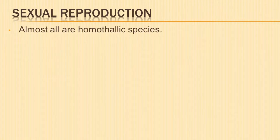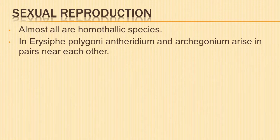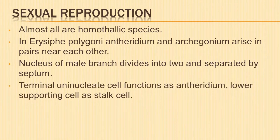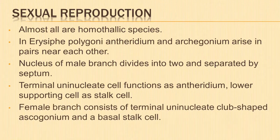Next, let us learn about sexual reproduction in Erysiphe. Sexual reproduction occurs in summer and almost all species are homothalic. In Erysiphe polygoni, sex organs — antheridium and ascogonium — arise in pairs near each other from the somatic mycelium. The nucleus of the male branch divides into two and are separated by a septum. The terminal uninucleate cell functions as the antheridium and the lower supporting cell as the stalk cell. The female branch consists of a terminal uninucleate club-shaped ascogonium and a basal stalk cell.